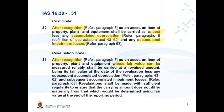Paragraph 31 deals with the revaluation model. After recognition as an asset, an item of PPE whose fair value can be measured reliably shall be carried at a revalued amount — being its fair value at the date of the revaluation — less any subsequent accumulated depreciation and subsequent accumulated impairment losses.